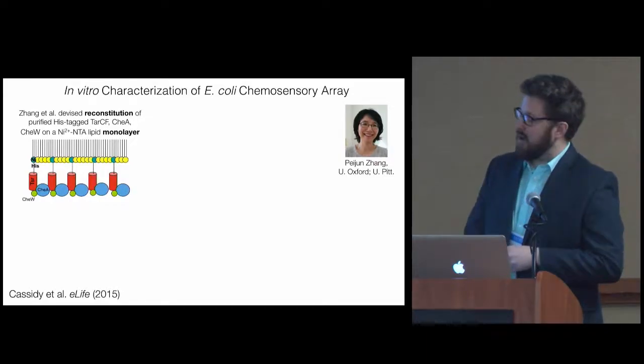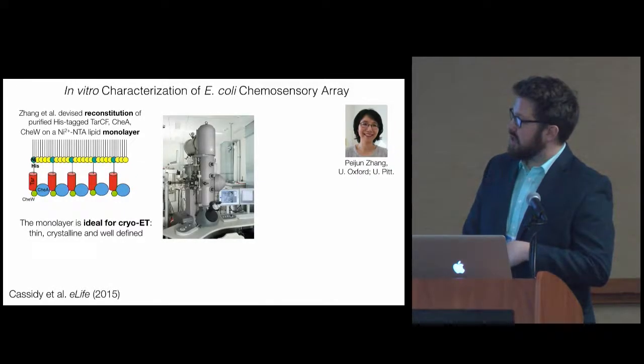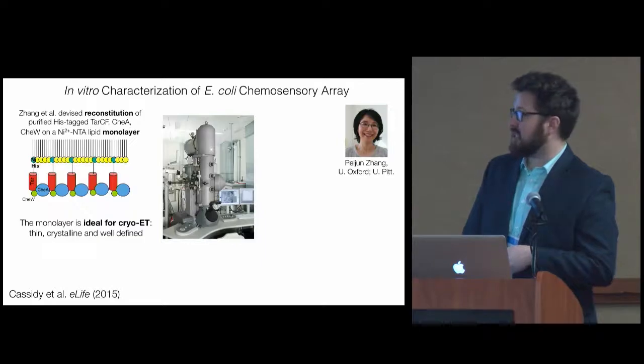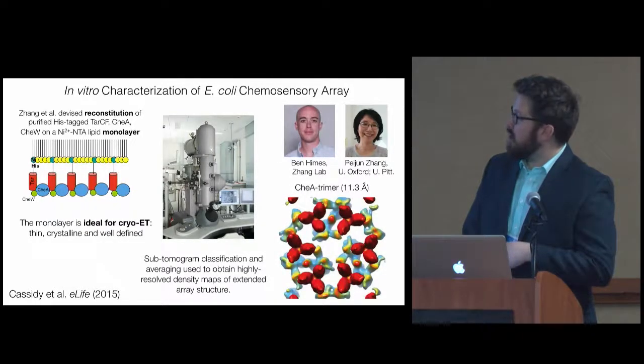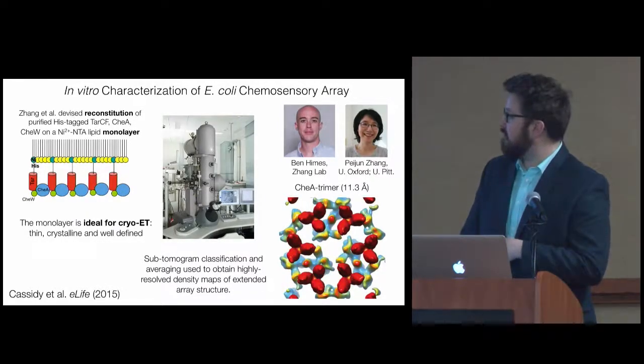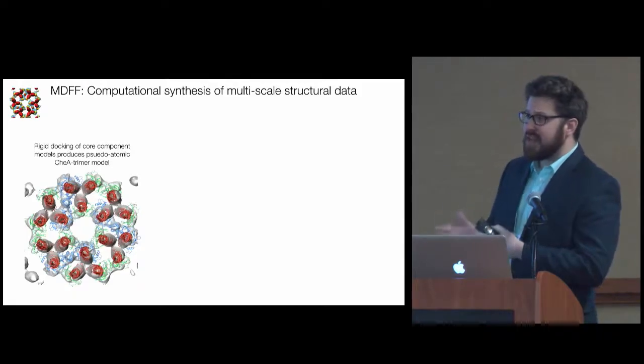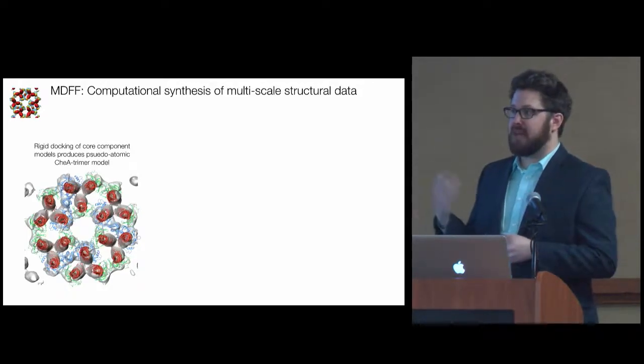This is work that was done in collaboration with Peijun Zhang, now at Oxford, formerly at the University of Pittsburgh. She devised a way to basically deposit the key signaling proteins on lipid monolayers. The details are pretty technical, but the take-home is that it was ideal for electron microscopy. It provided thin, crystalline, and well-defined samples. Using subtomogram classification and averaging, they were actually able to resolve 3D density maps of the extended array architecture. The one I'm showing here was processed and obtained by Ben Himes in her lab, in Peijun Zhang's lab, and came in at just a little above 11 angstroms.